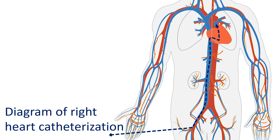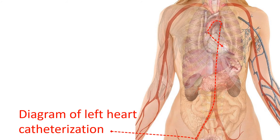Catheterization of the right side of the heart is called right heart catheterization. This is done by introducing catheters through the veins, the blood vessels carrying oxygen-poor blood to the heart. Catheterization of the left side of the heart is known as left heart catheterization. This is done by introducing catheters into the arteries, the blood vessels carrying oxygenated blood to various parts of the body. In most cases, both are done in the same sitting, often simultaneously.